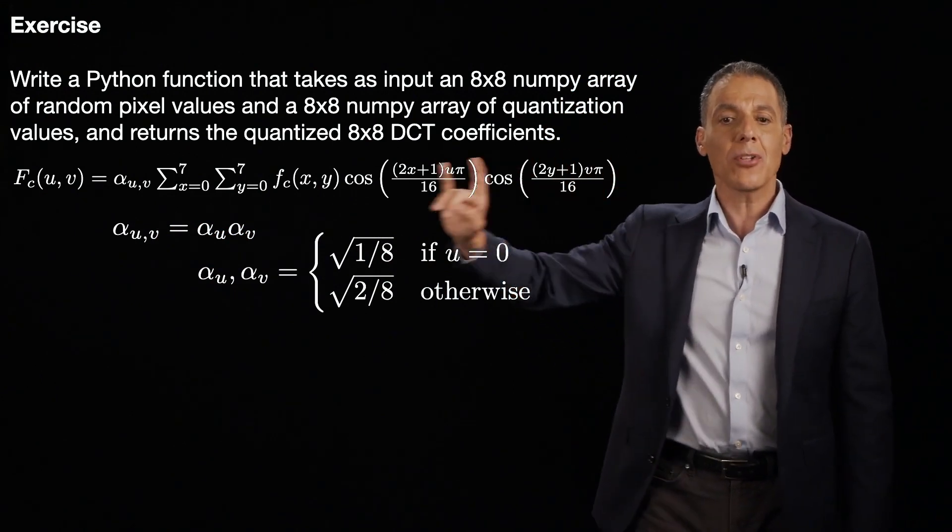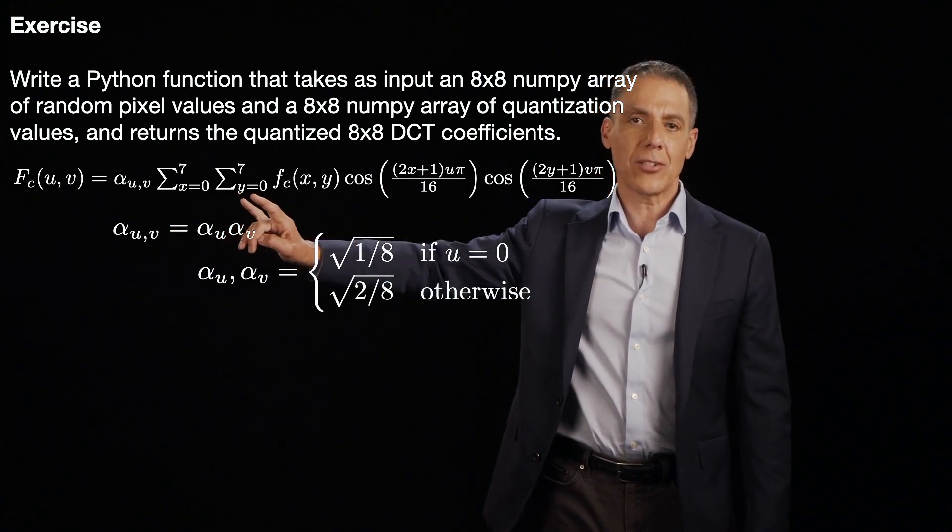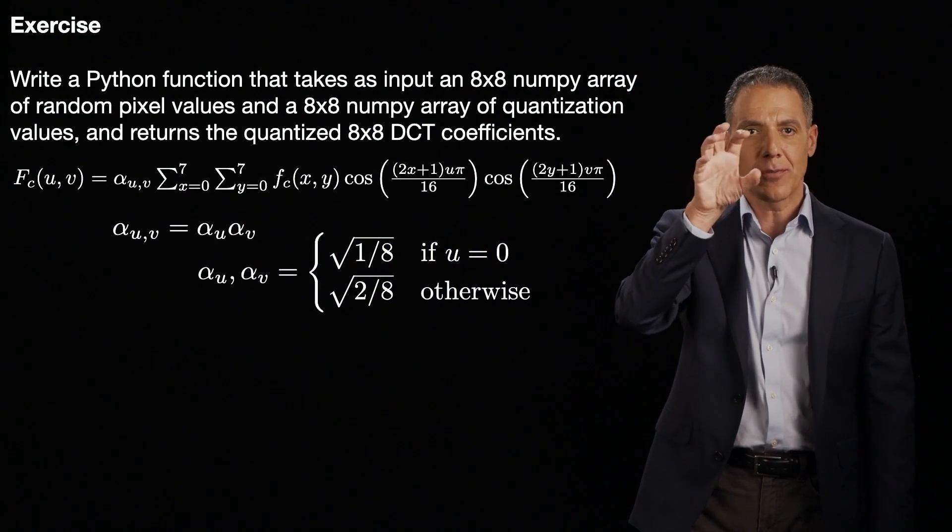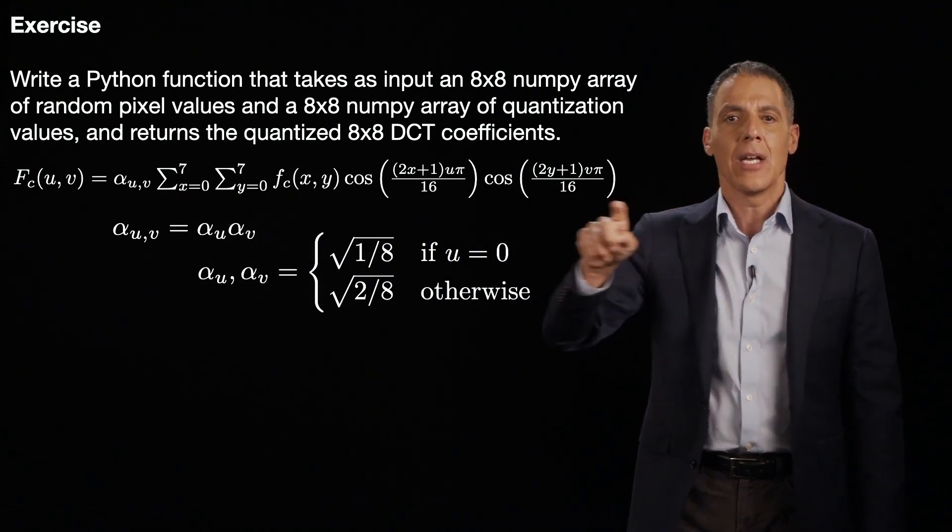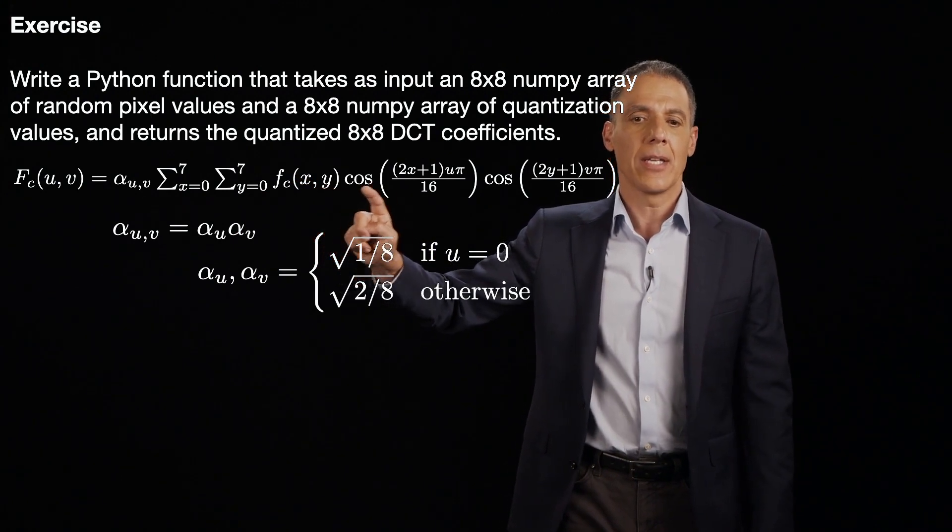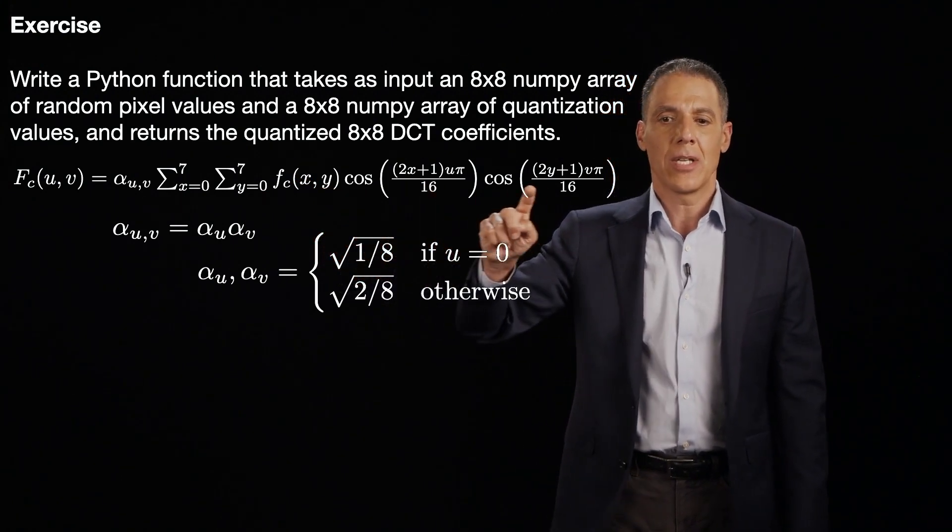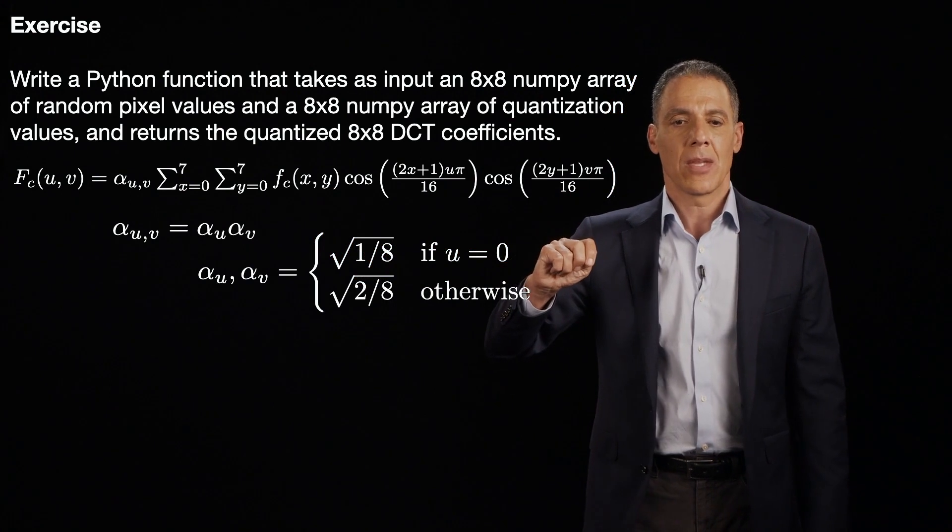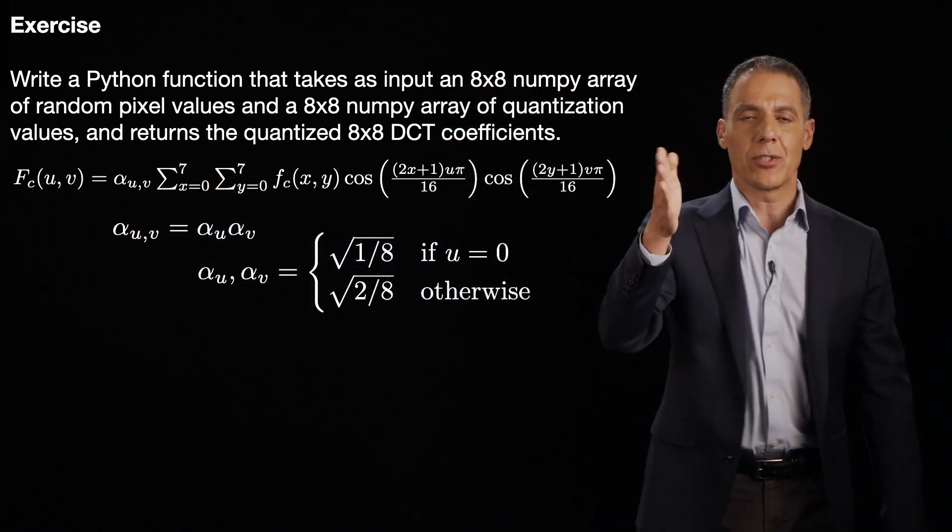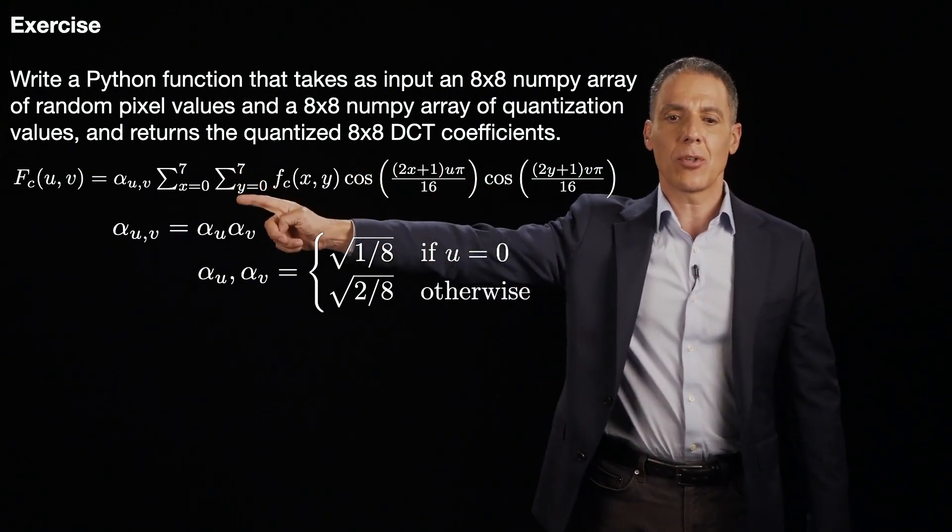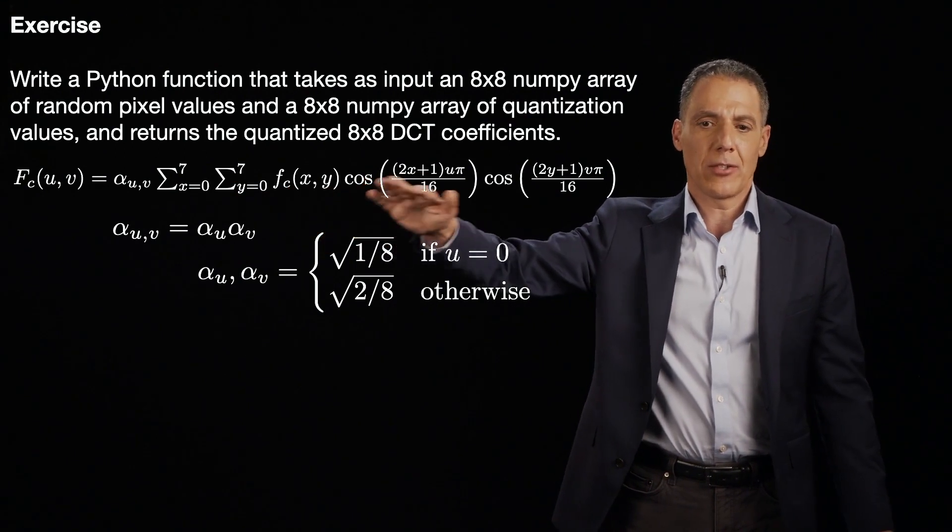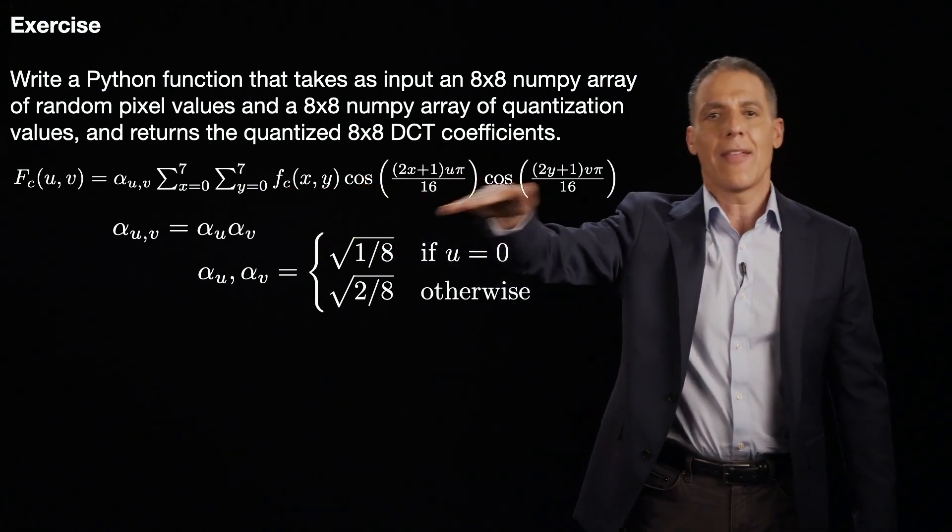So x equals 0 to 7, y equals 0 to 7. So that's all the pixel values in the input block of the actual pixel value. That's f_c of x comma y times this cosine term times this cosine term. So what you have to do is for each possible u, v, u going from 0 to 7, 0 to 7, compute this double sum. So that's pretty easy to evaluate. Just take the pixel values, evaluate these cosines, and then sum everything up.